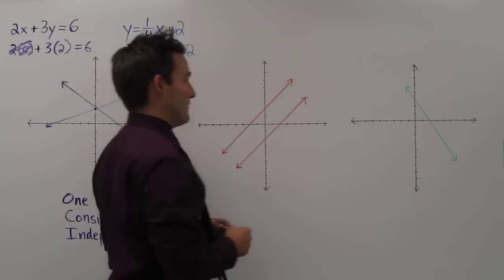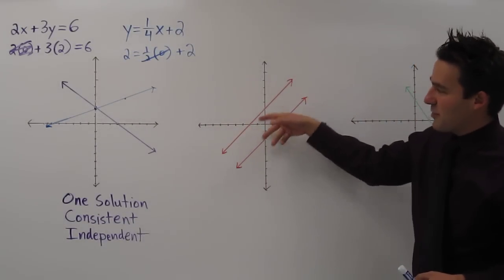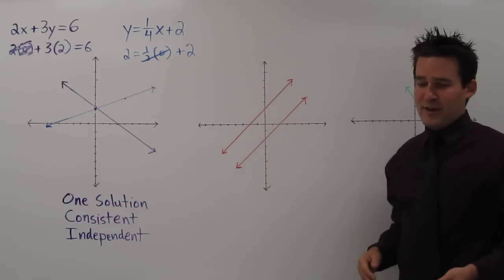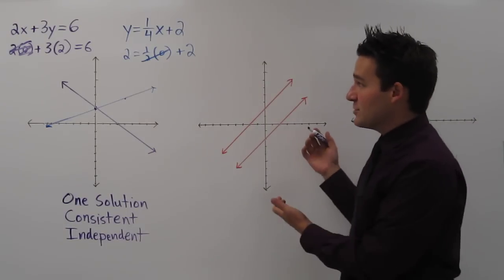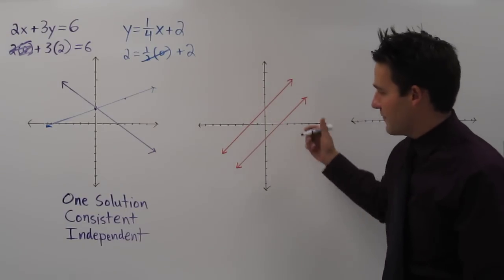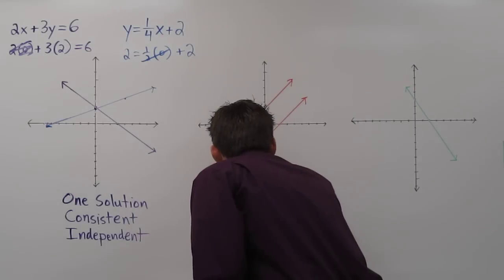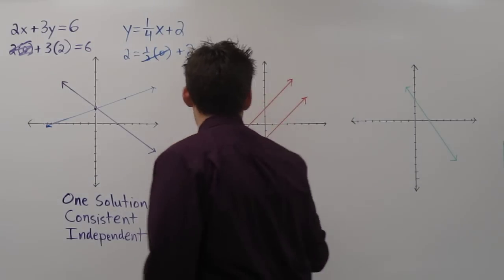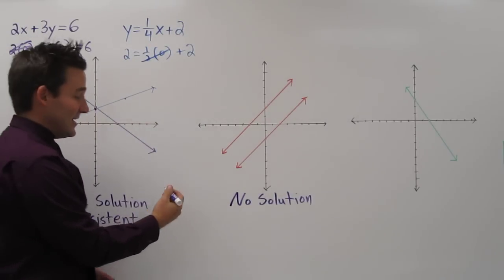Now, sometimes when we graph a system of linear equations, we end up with parallel lines. Because these lines never intersect, there's actually no solution to this system of equations. And we would call this inconsistent.